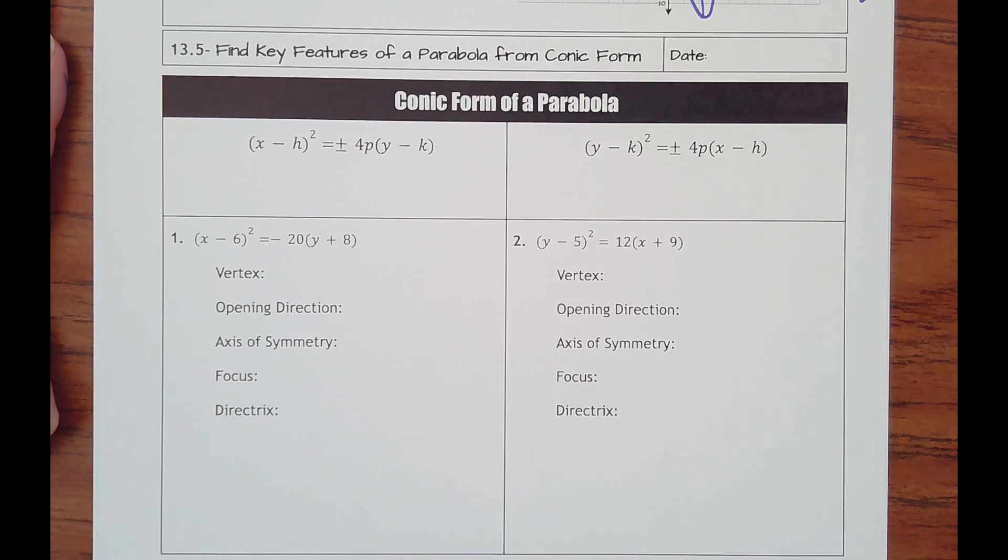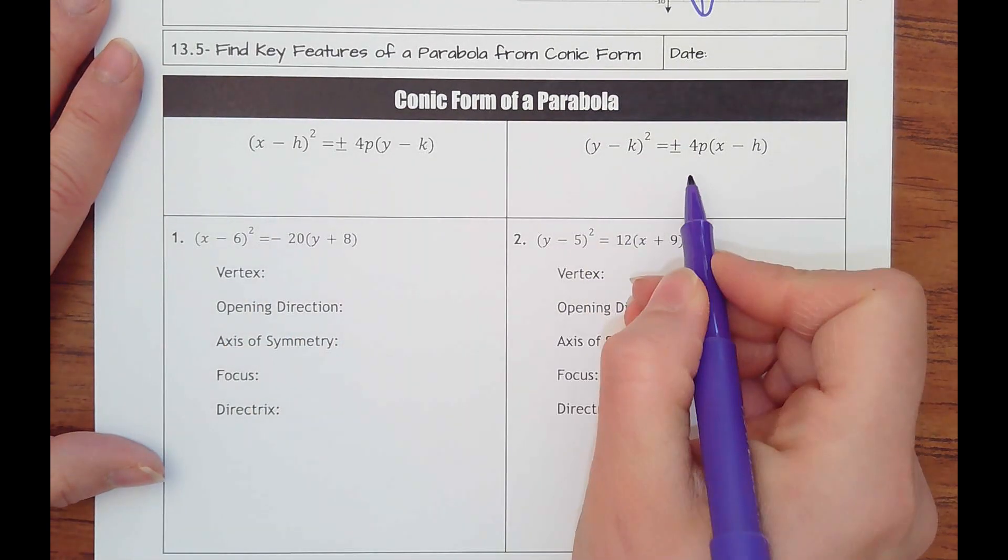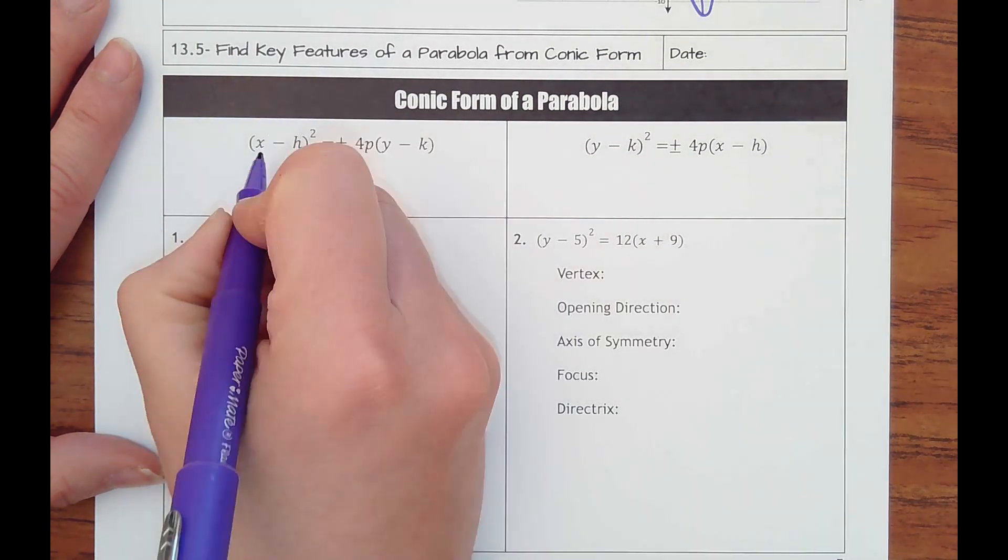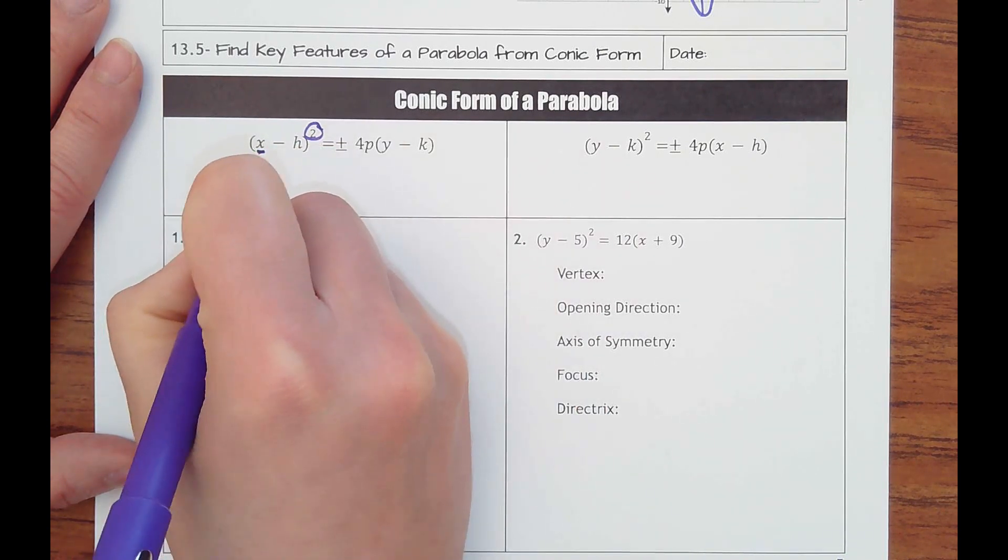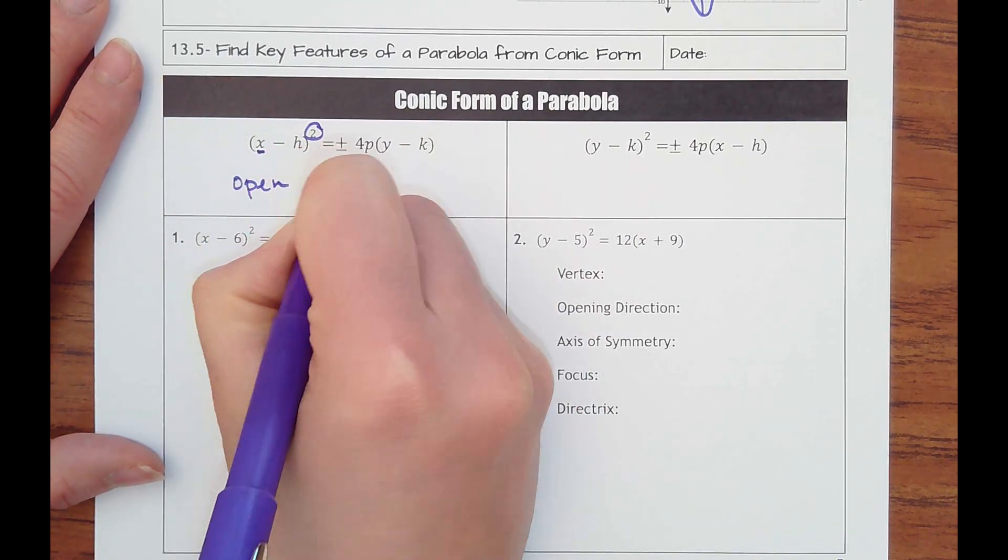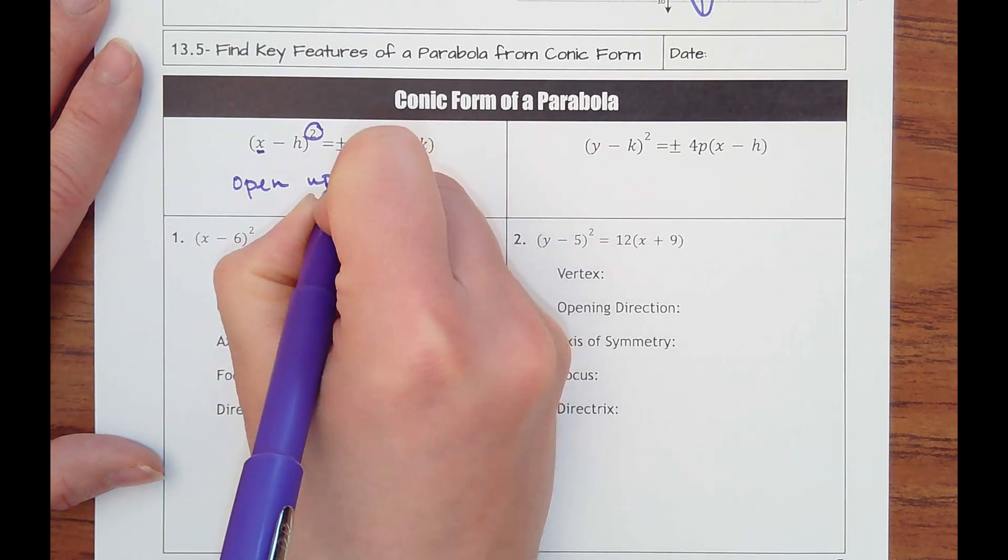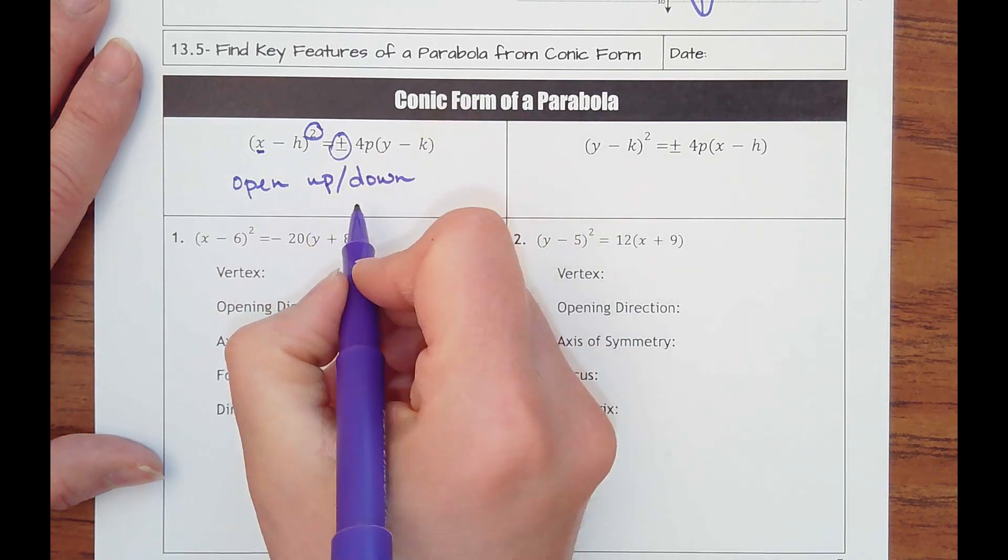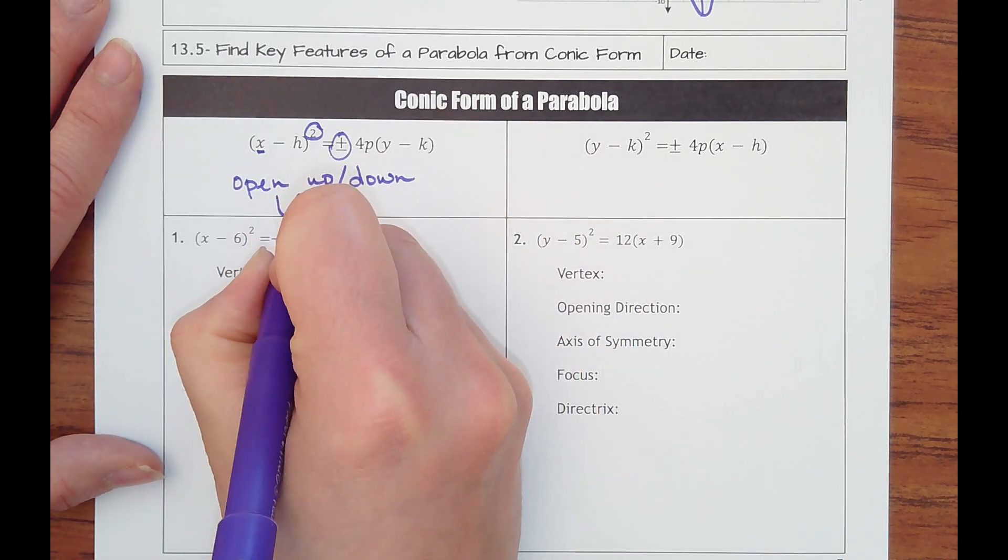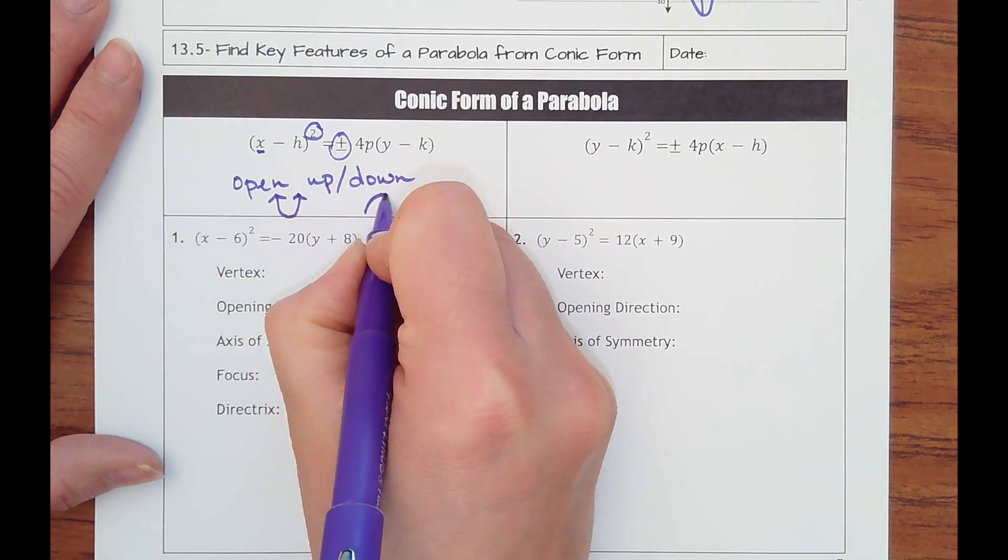Lesson 13.5, finding key features of a parabola from its conic form. So we've seen this before. There's two different ones because if x is being squared, it's going to open up or down. So it all then depends on the sign of this value. It's going to open up if it's positive or open down if it's negative.